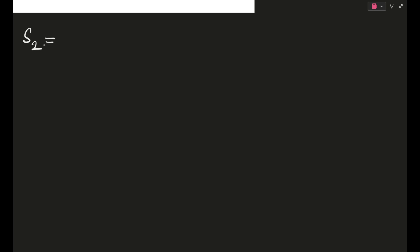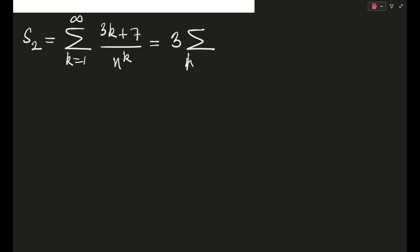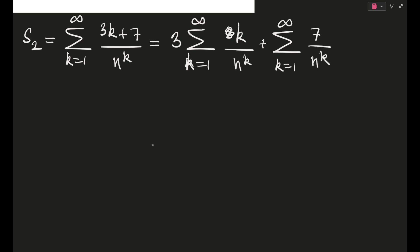Some things were given. First, we will deal with S2 — we'll deal with S1 later on, because the first question deals with S2 and S3. So S2 is the sum: σ (k=1 to ∞) of (3k + 7) / n^k. Breaking this apart, we can write it as 3·σ(k=1 to ∞) k/n^k plus σ(k=1 to ∞) 7/n^k. We'll leave it like this and deal with it shortly.